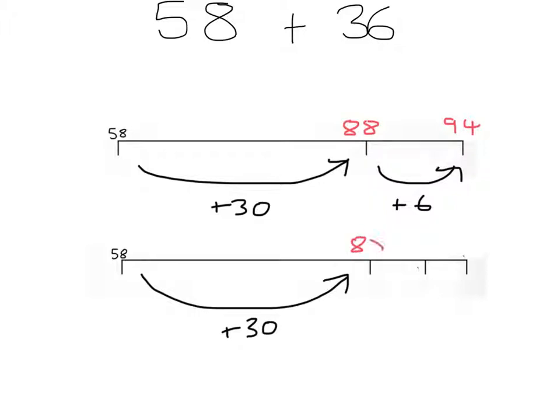But then they would add a number bond of 2 to take that up to the next 10. And then they would say they still needed to add 4 to get this totalling to 36. So then 90 add 4, giving 94.